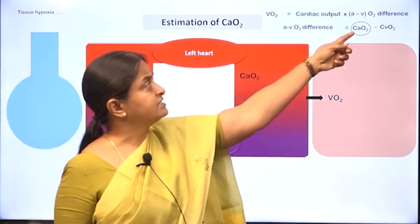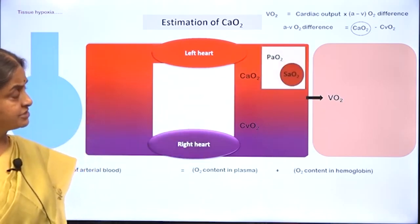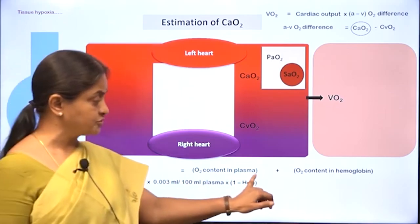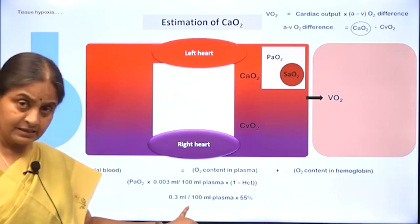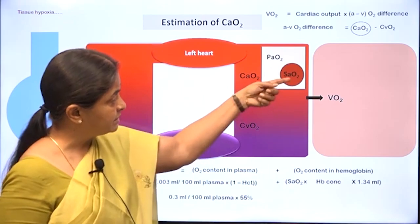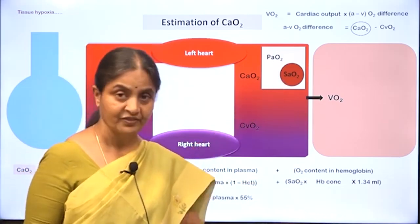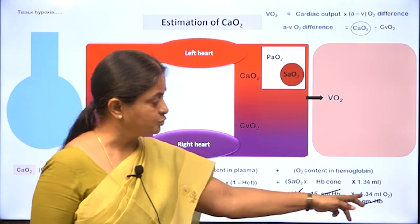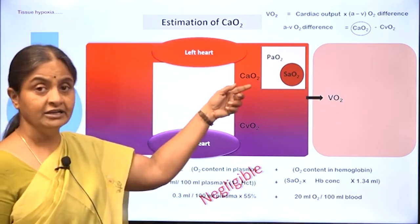Now let us estimate VO2. Arterial oxygen content equals oxygen content in plasma plus oxygen content in hemoglobin, but oxygen content in plasma is negligible. It is the oxygen carried in hemoglobin that really matters. To estimate it, we need hemoglobin saturation with oxygen and hemoglobin concentration, multiplied by the constant 1.34. So: 15 g/dL into 1.34 gives 20 milliliters of oxygen per 100 ml of blood as the arterial oxygen content.